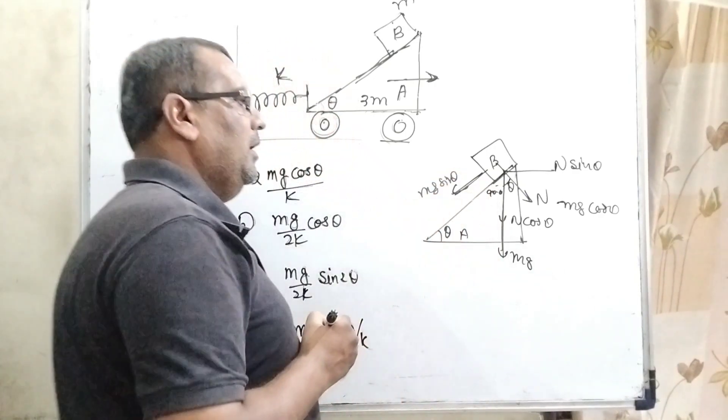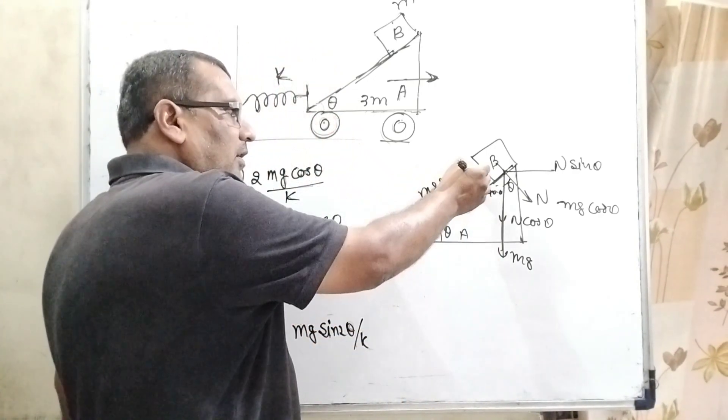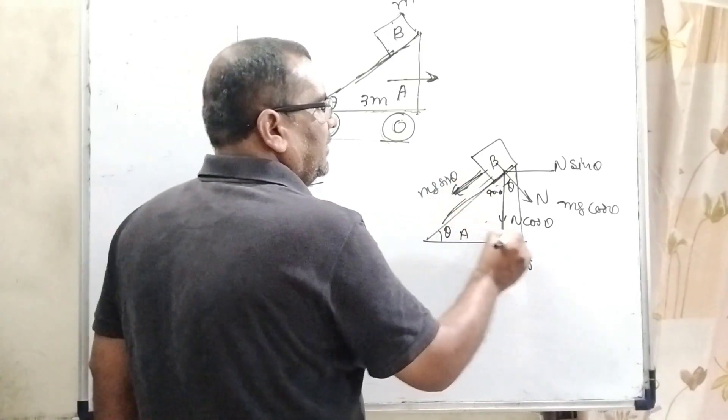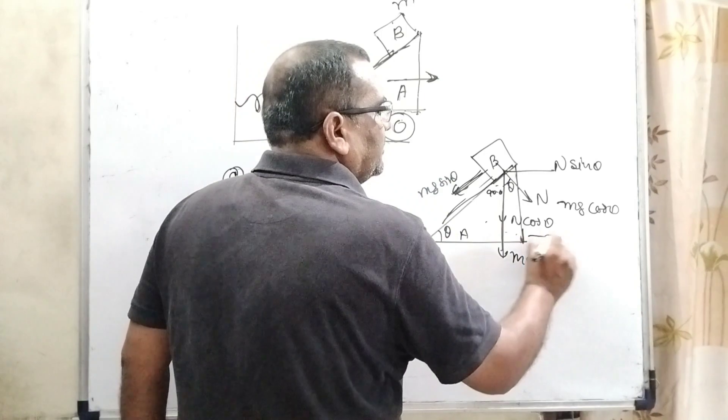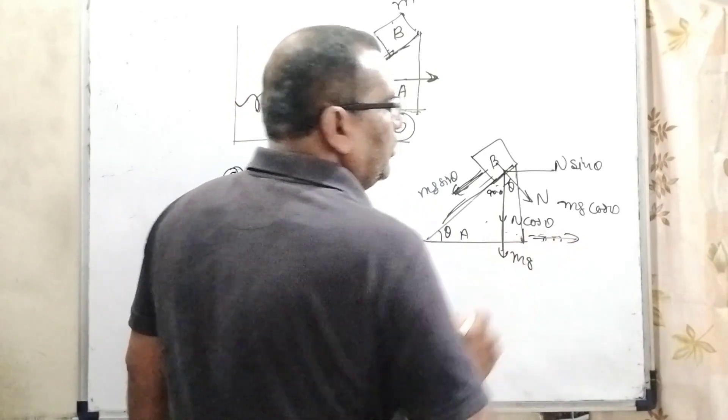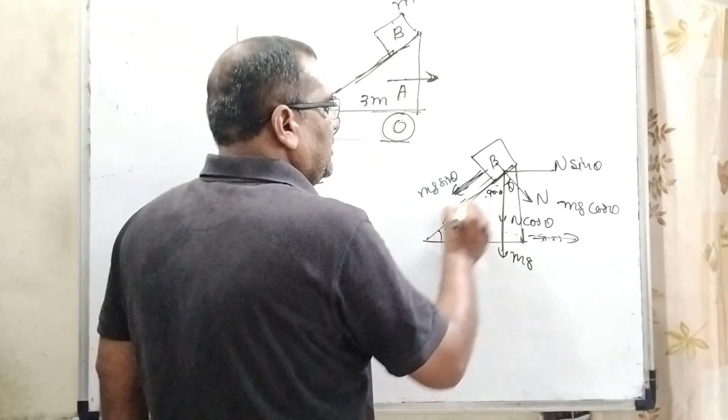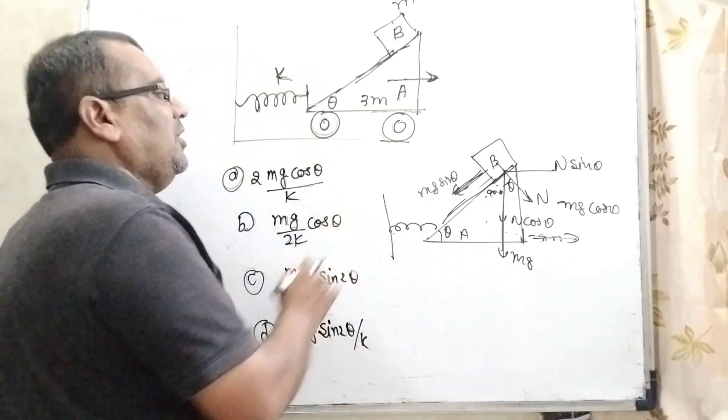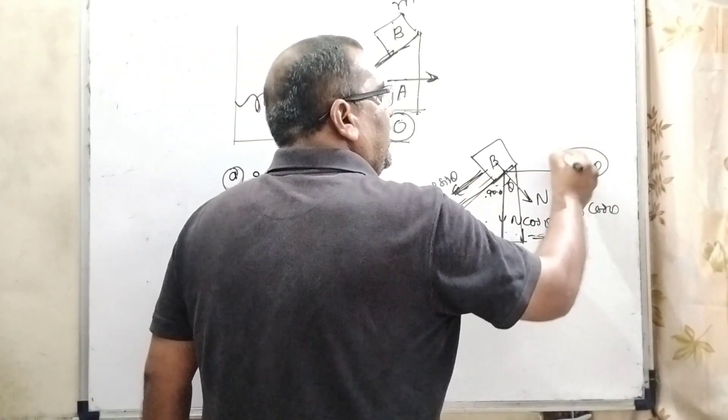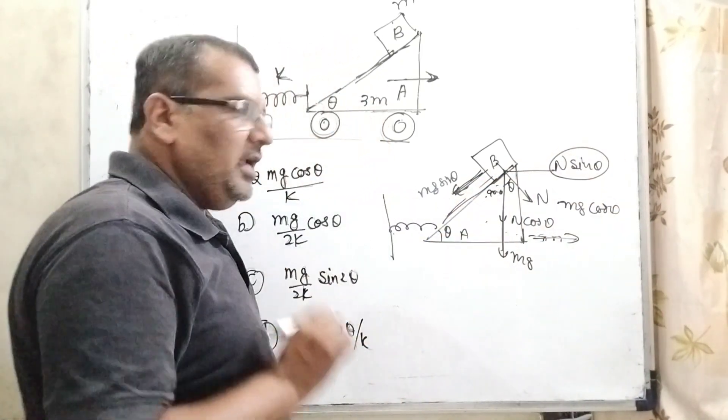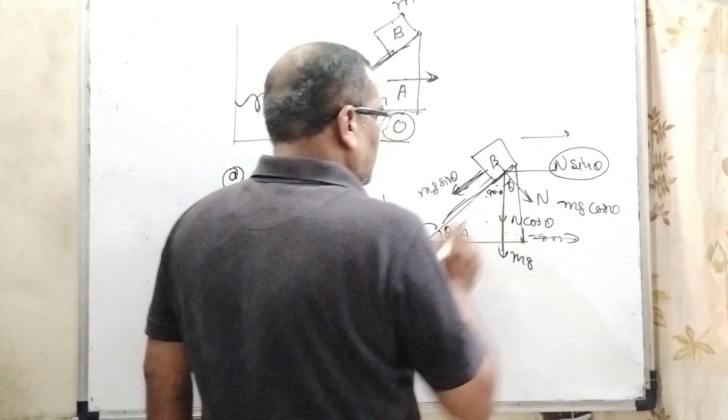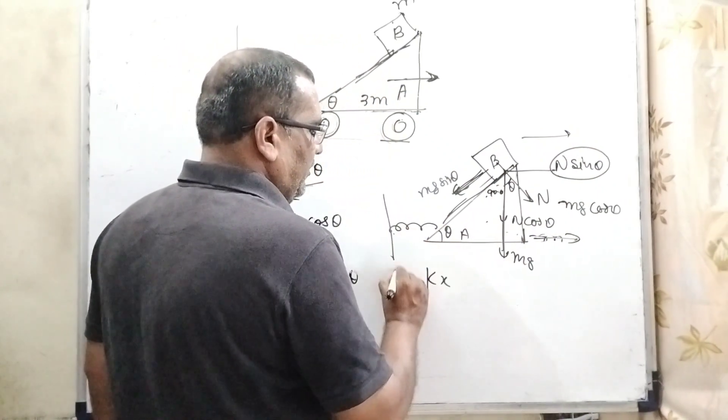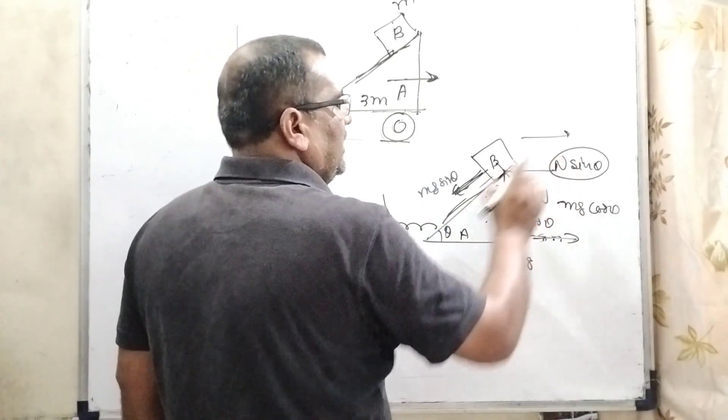So dividing into two components, here Mg cos theta and Mg sin theta. We already discussed that Mg sin theta is sliding in the downward direction. And due to this, this wedge is moving to the right side. Due to this, pseudo acceleration is generated. Here, this wedge is connected with the spring, and we have to calculate extension of the spring. So therefore, only one force, N sin theta. N sin theta is responsible for the extension of the spring.